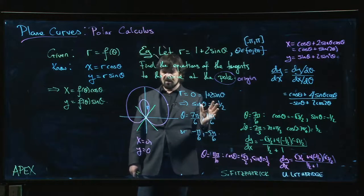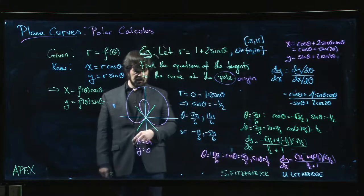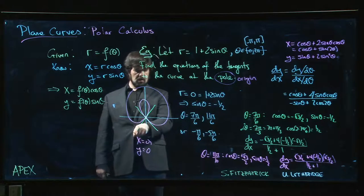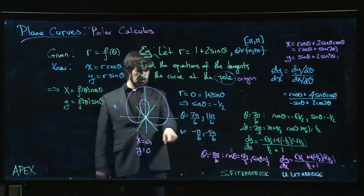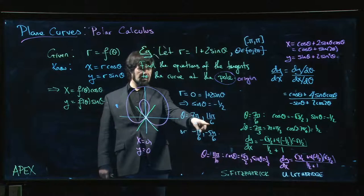That's pretty much all we need to know. We know that this line here corresponds to theta equals 7 pi over 6. This line here corresponds to an angle of theta equals 11 pi over 6.